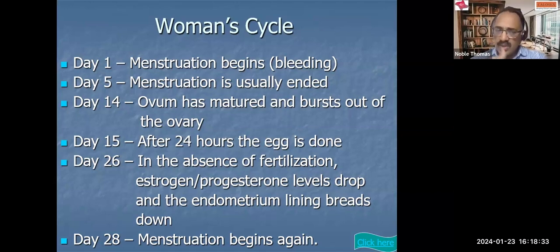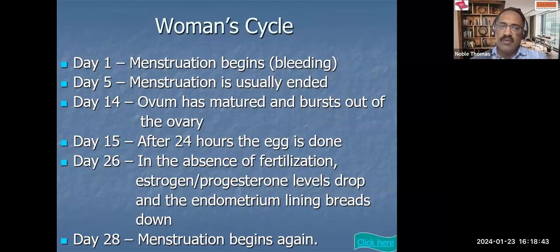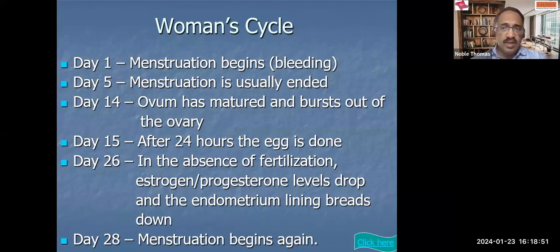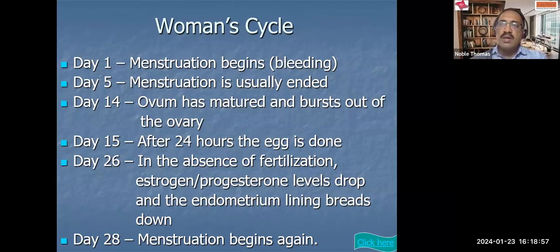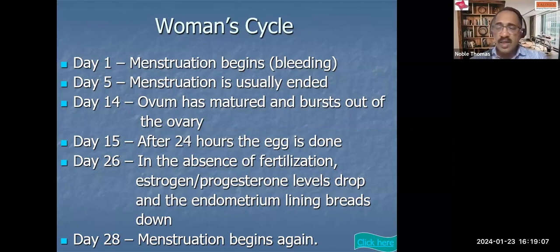The menstrual cycle extends up to around five to seven days. During this time, another ovum is also under preparation and will mature by the 14th day, when ovulation happens. From the 14th to around the 17th or 18th day, the ovum is available in the fallopian tube. By the 20th day it will be somewhere in the uterus, still waiting a few more days for fertilization and implantation. If that does not happen, the next menstruation cycle starts.